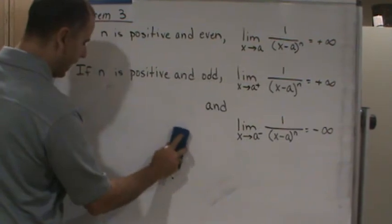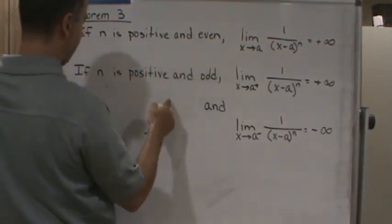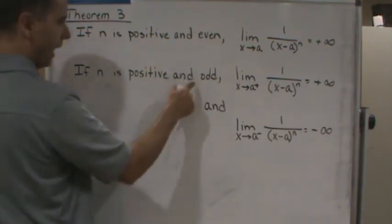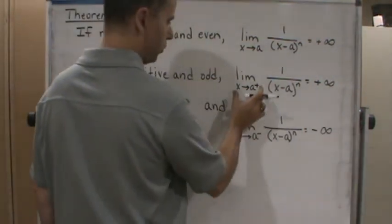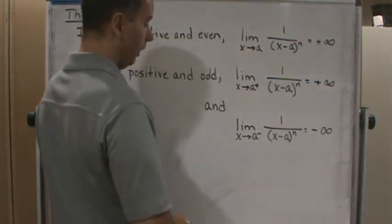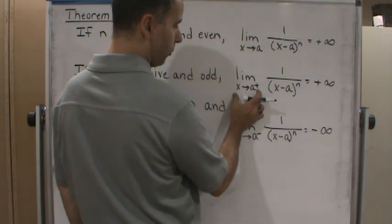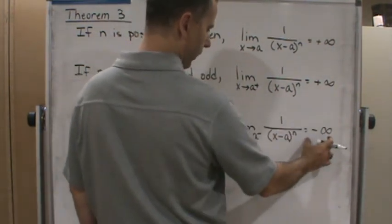Whereas with odd, positive and odd, when n is positive and odd, that means they're going in opposite directions, and so then you have the right and left-hand limits. So the limit from the right will go to positive infinity, the limit from the left will go to negative infinity.